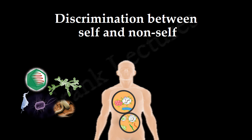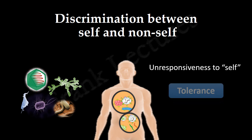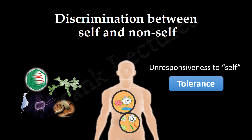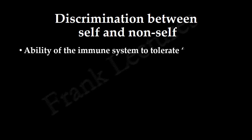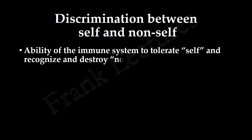This unresponsiveness to self is known as tolerance. So discrimination between self and non-self refers to the ability of the immune system to tolerate self and to recognize and destroy non-self.